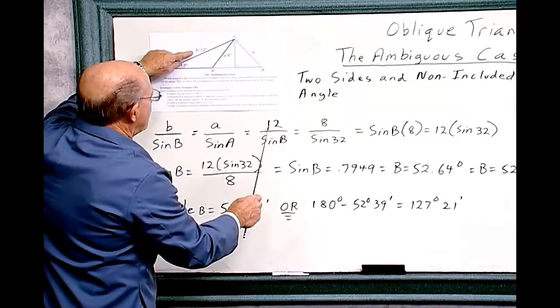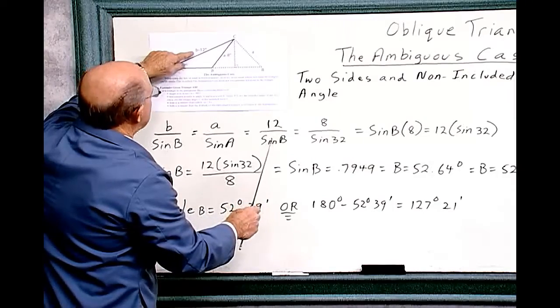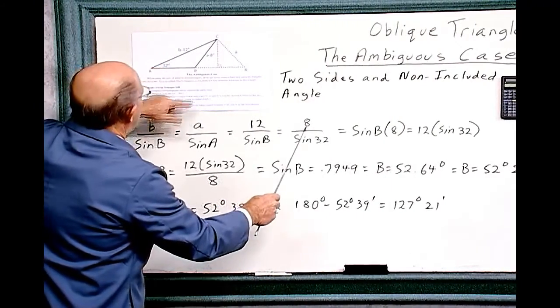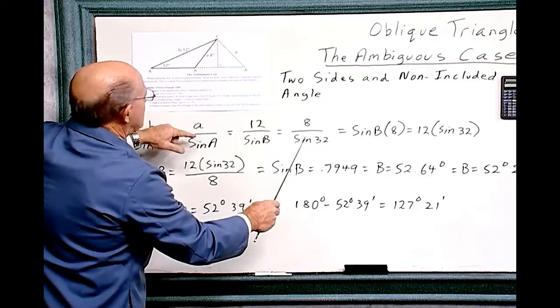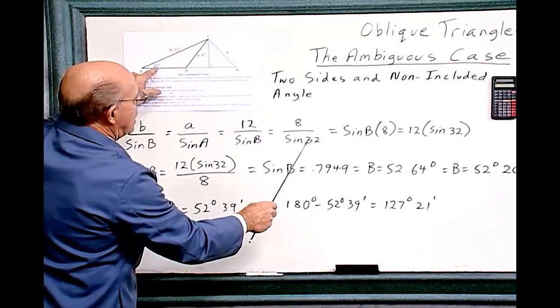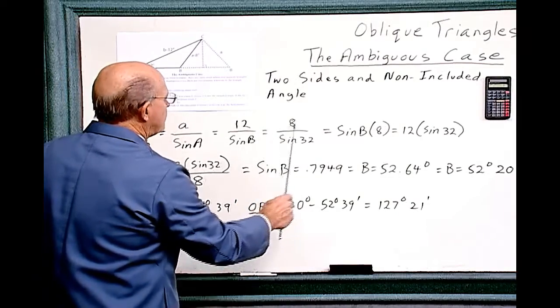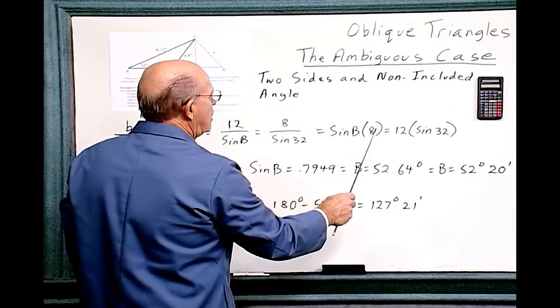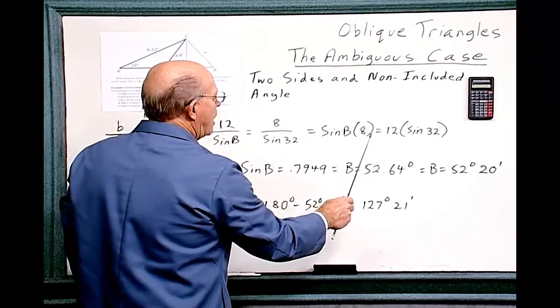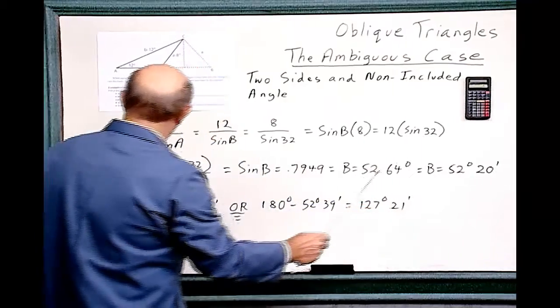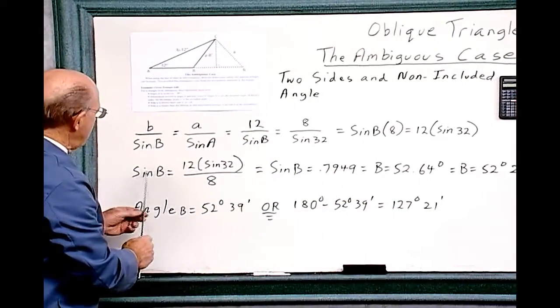B is 12 over sine B. That's what we want to find. And 8 is A, that's over here. And sine A is 32. When we cross multiply, sine B multiplied by 8 equals 12 multiplied by sine 32. And we get sine B equals